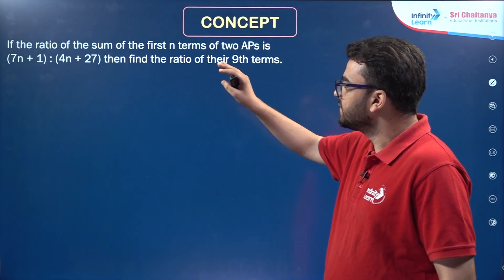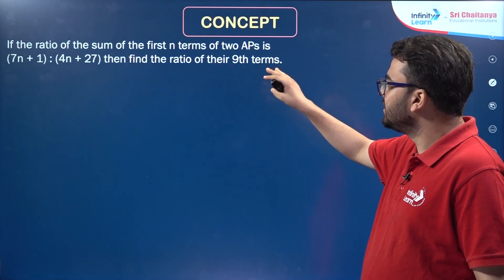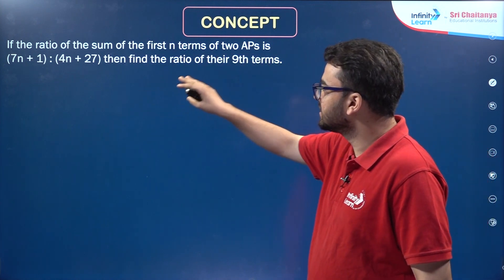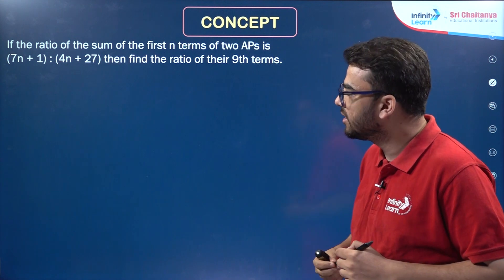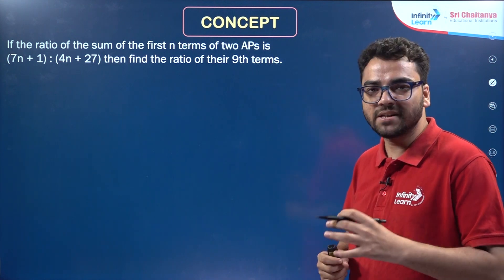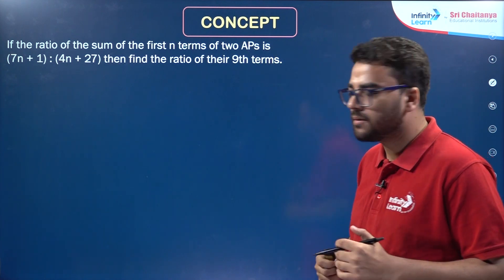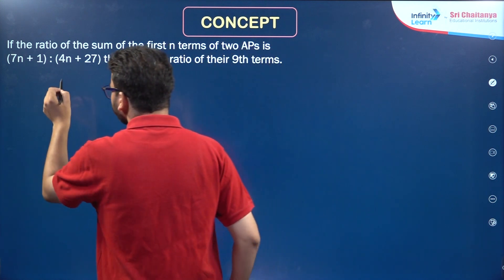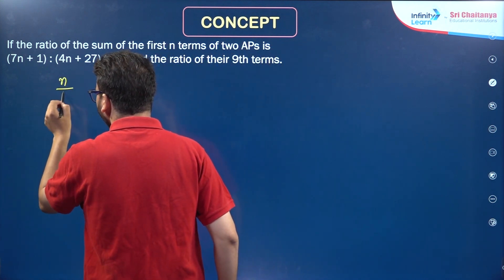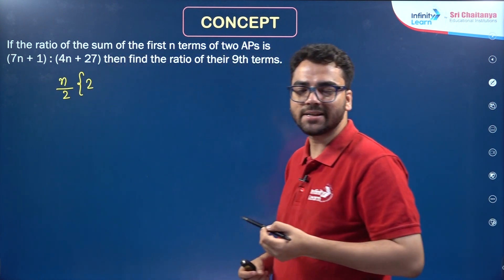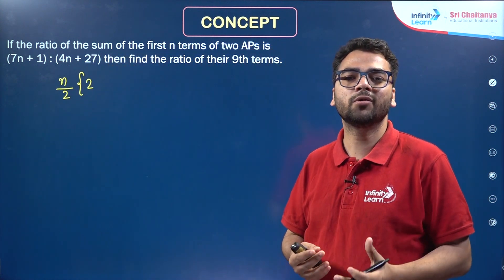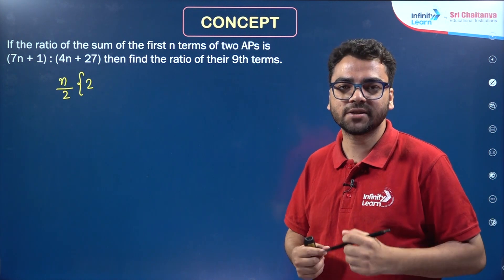If the ratio of the sum of the first n terms of 2 APs is (7n + 1):(4n + 27), then you have to find the ratio of their 9th terms. So basically for 2 APs, the sum of the first n terms is given. Sum of the first n terms of the first AP will be n/2 × (2A + (n-1)D). That is the formula. But we don't know the first term and the common difference of the first AP.